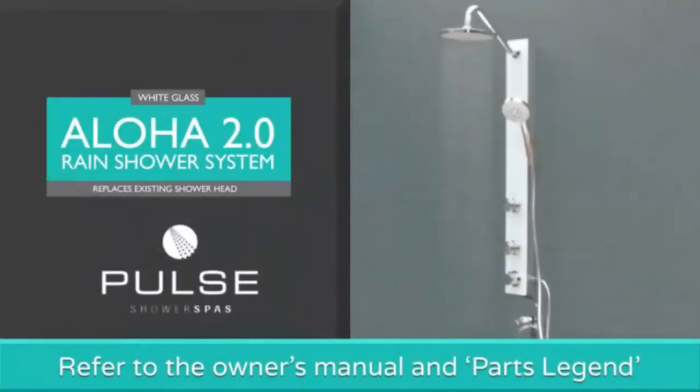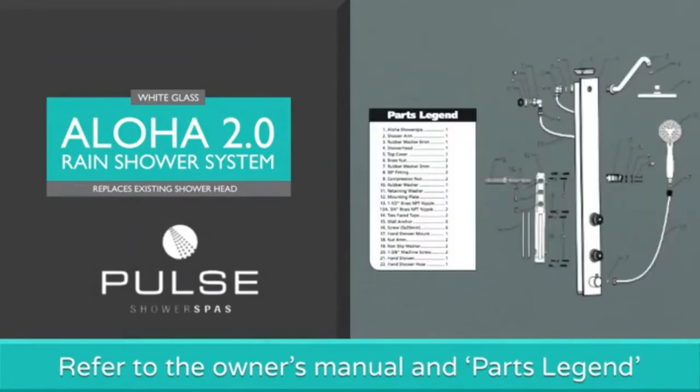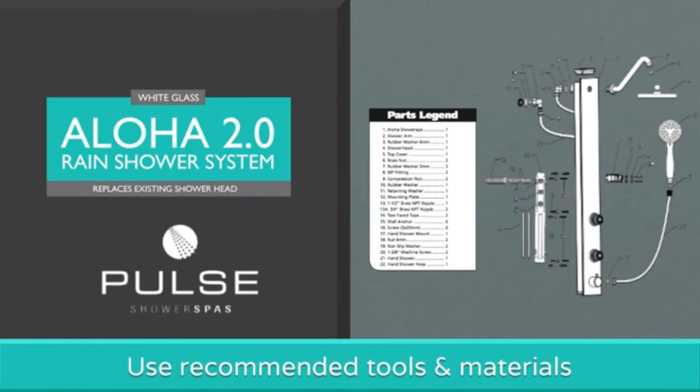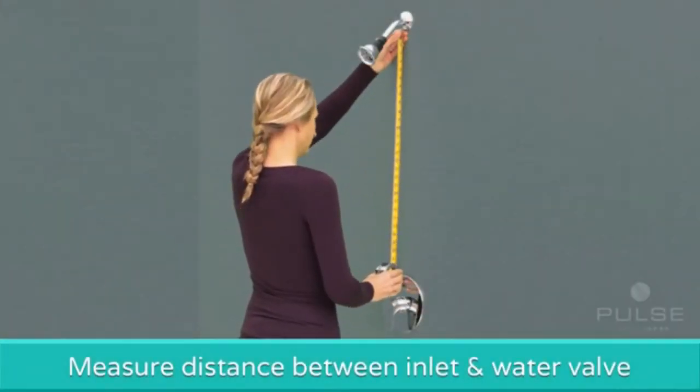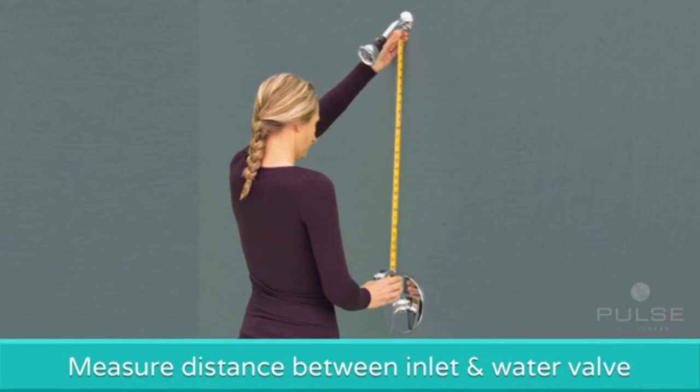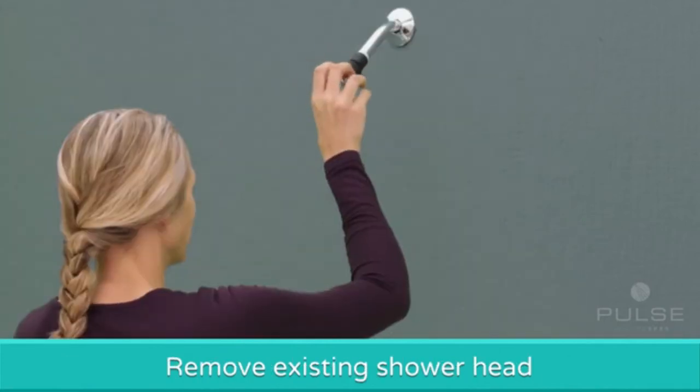Before installation, please refer to the owner's manual to ensure all parts are included as shown in the parts legend. Use the recommended tools and materials needed for the shower unit assembly and installation. First, measure the distance between the inlet and your water valve to make sure you have the required space for the new shower unit. Next, remove the existing shower head.